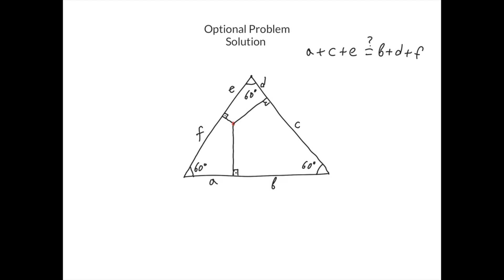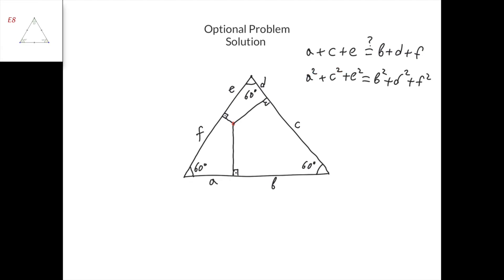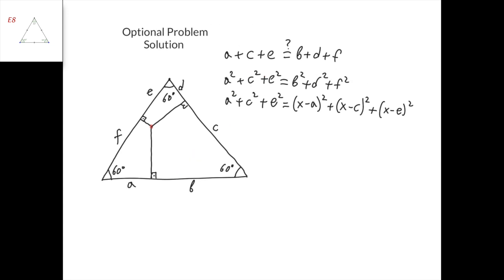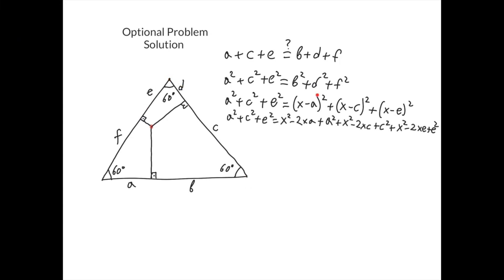Here is the solution. First we apply Carnot's theorem to get a² + c² + e² = b² + d² + f². We need almost the same thing but without the squares. Since the triangle is equilateral all sides are equal, call the side length x. So b = x − a, d = x − c, and f = x − e, because a + b = x, c + d = x, and e + f = x.